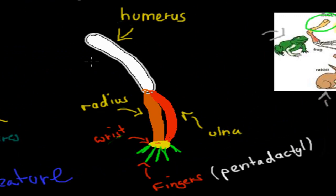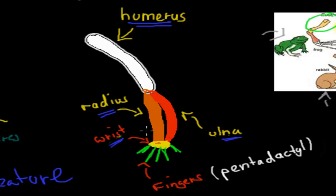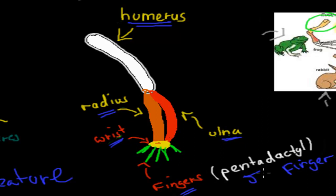We have our top bone, which is called the humerus. We have two forearm bones, called the radius and the ulna. We have a wrist between our forearm and our fingers, and we have five fingers as well. This is the pentadactyl arrangement — penta means five and dactyl means finger — so we have five fingers. That is a normal human arm: humerus, radius and ulna, wrist, and five fingers.